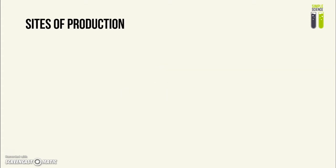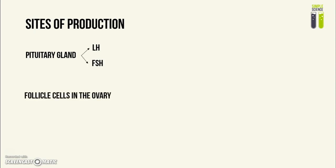First of all, I want to talk about the sites of production. The pituitary gland produces and secretes two hormones: luteinizing hormone and follicle stimulating hormone. The follicle cells in the ovary produce and secrete estrogen, and the corpus luteum secretes progesterone.